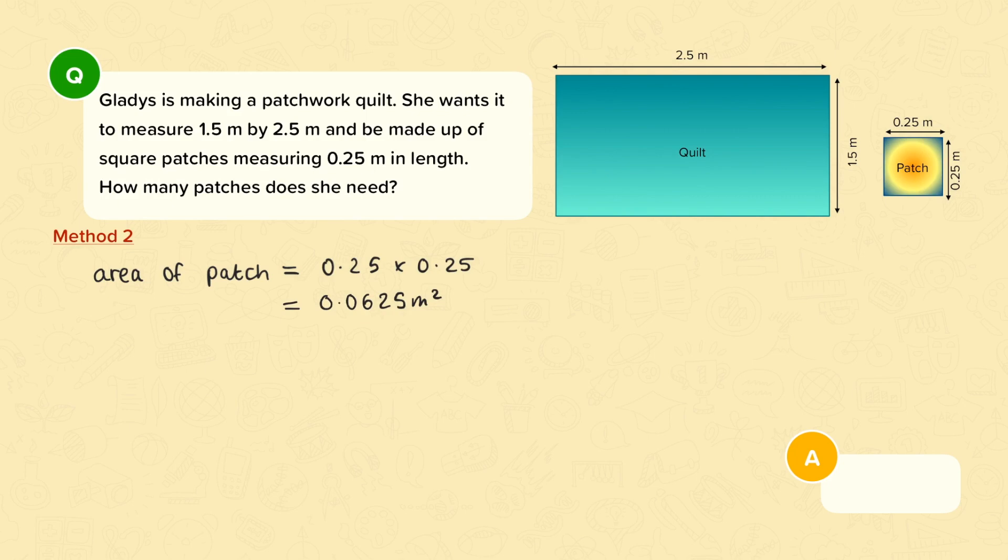And then for the area of the quilt I have 2.5 times 1.5. So the area of the quilt is 3.75 meters squared. Now to work out how many patches fit into the quilt I can do 3.75 divided by 0.0625 and that gives me an answer of 60. So again she will need 60 patches.